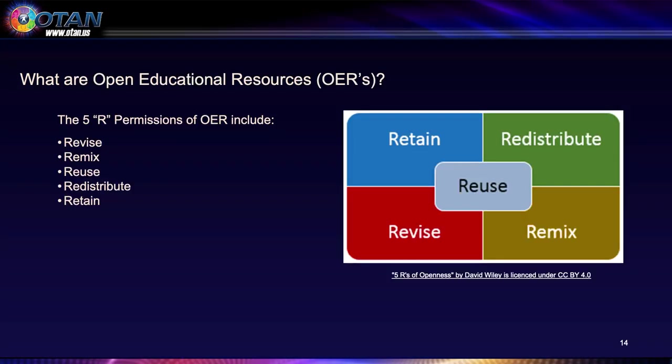When talking about open educational resources, you have to think about the five permissions — the five R's of OER. They include revise, remix, reuse, redistribute, and retain. In order for a resource to be a true OER, it has to contain all five of these.